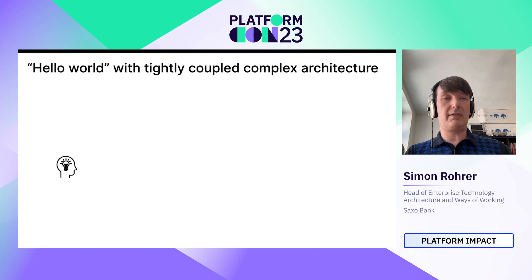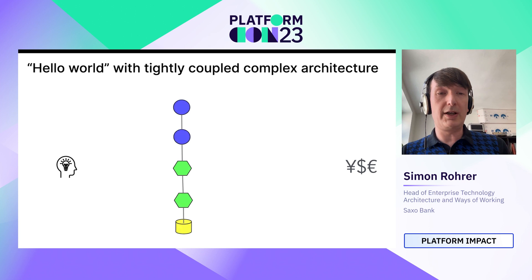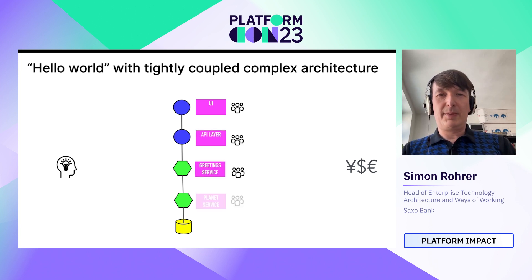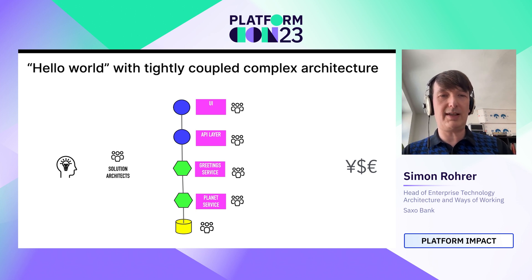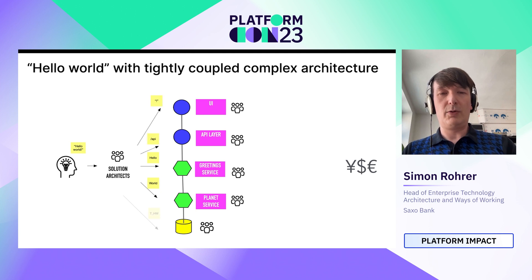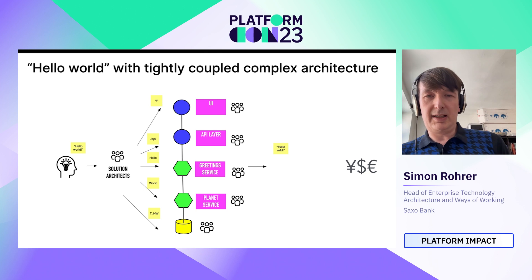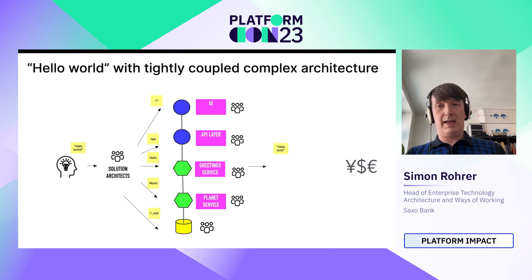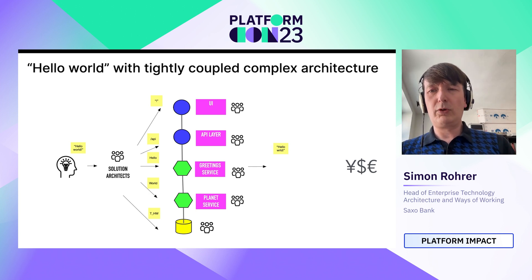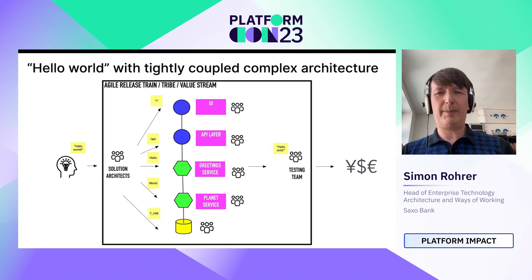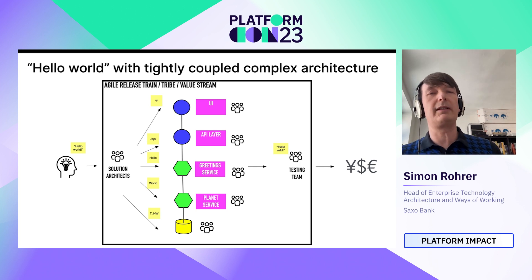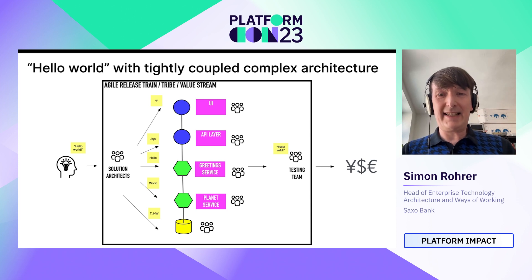In this tightly coupled complex architecture, it's hard to build even the simplest functionality like Hello World — where you have an idea on the left and want to take that to some cash on the right. You end up having to talk to a number of teams because you've got a number of layers. You need solution architects in the middle to work out which bit of your fairly simple idea goes where. The solution architects distribute work to different teams, and after a few months of coordination — maybe that got into PI planning that quarter — you end up with something close enough. A modern way of managing those dependencies is to wrap it in something like a release train or a value stream, but that's far from optimal.